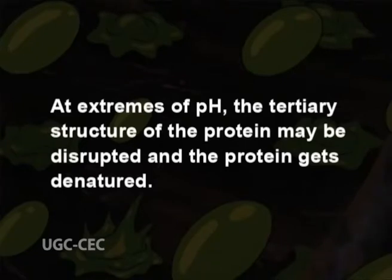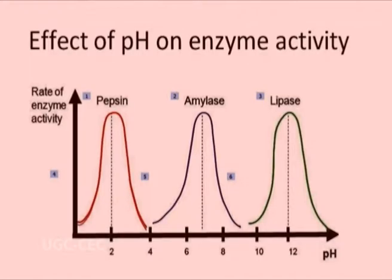A major change in pH completely denatures the enzyme, so enzyme activity stops at extremes of pH compared to the optimum pH. At extremes of pH, the tertiary structure of the protein may be disrupted and the protein gets denatured. Hence, the optimum pH for the reaction is the pH at which the ionization states of the substrates and enzyme are most favorable for the reaction. Many common enzymes have different optimum pH values.